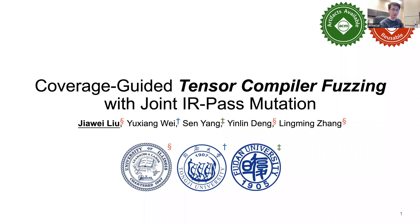My name is Java Liu. I'm a first year PhD student at the UALC. Today I'm very happy to share my work called coverage-guided tensor compiler fuzzing with joint IR pass mutation.